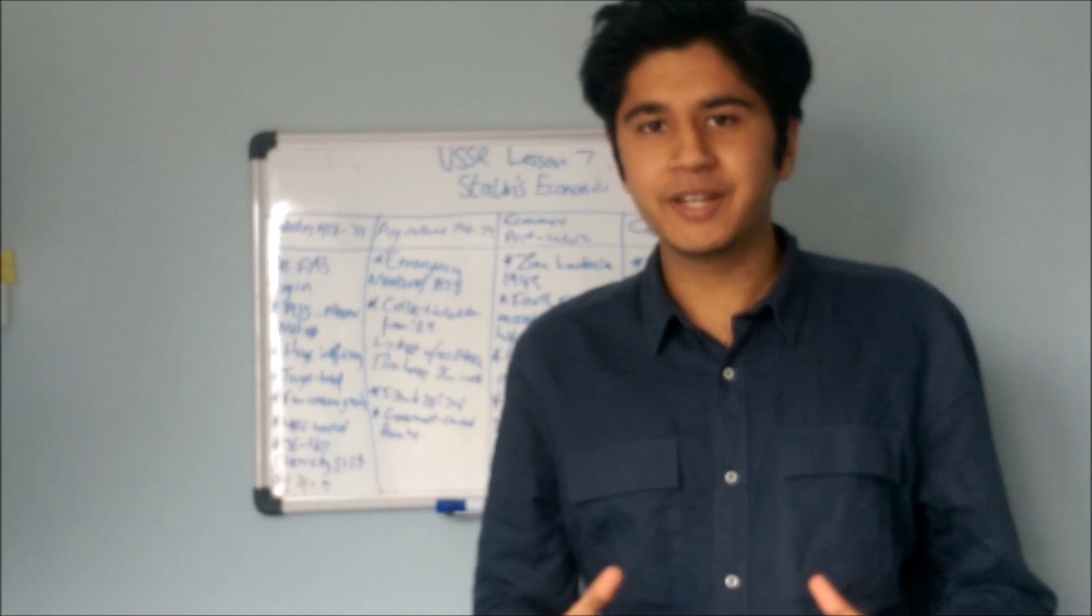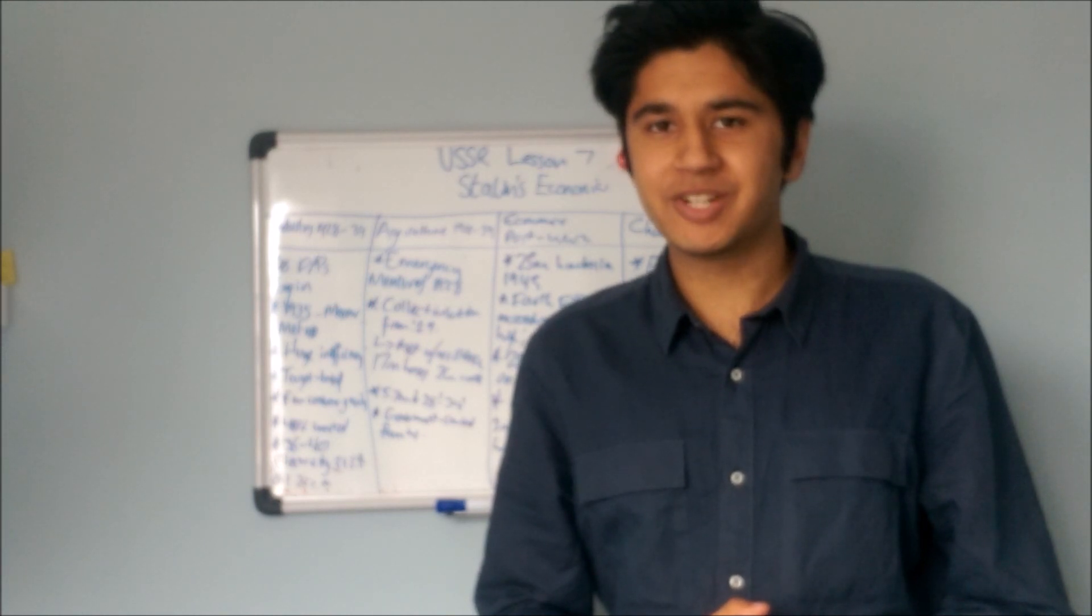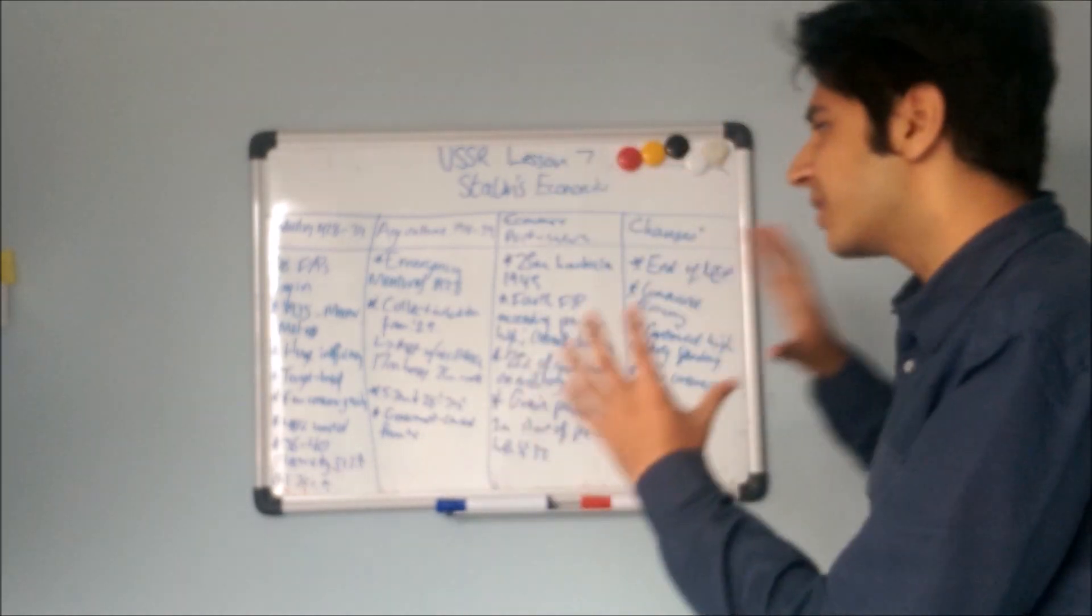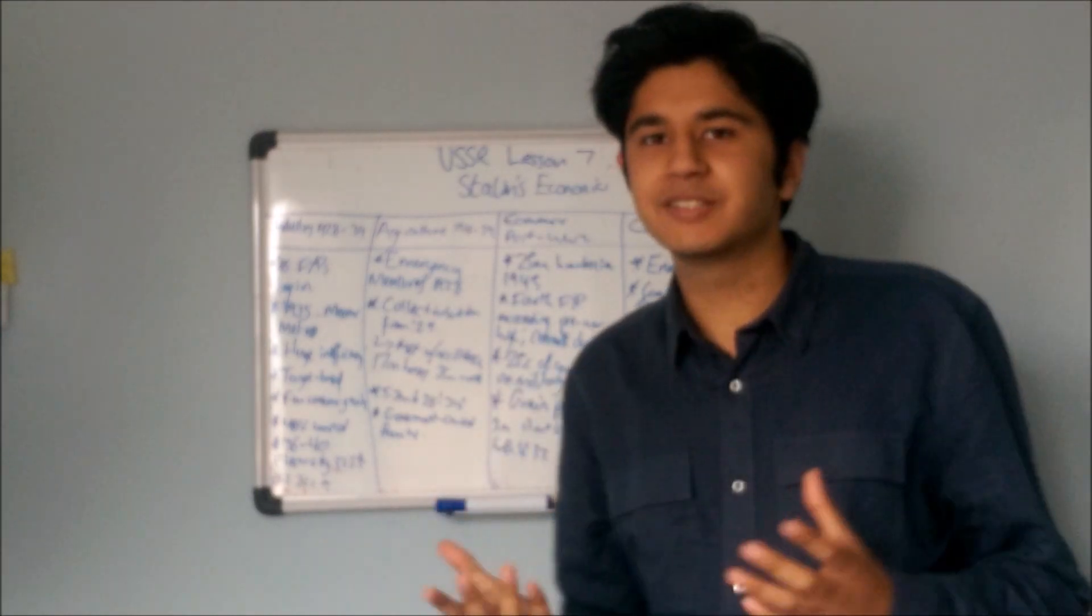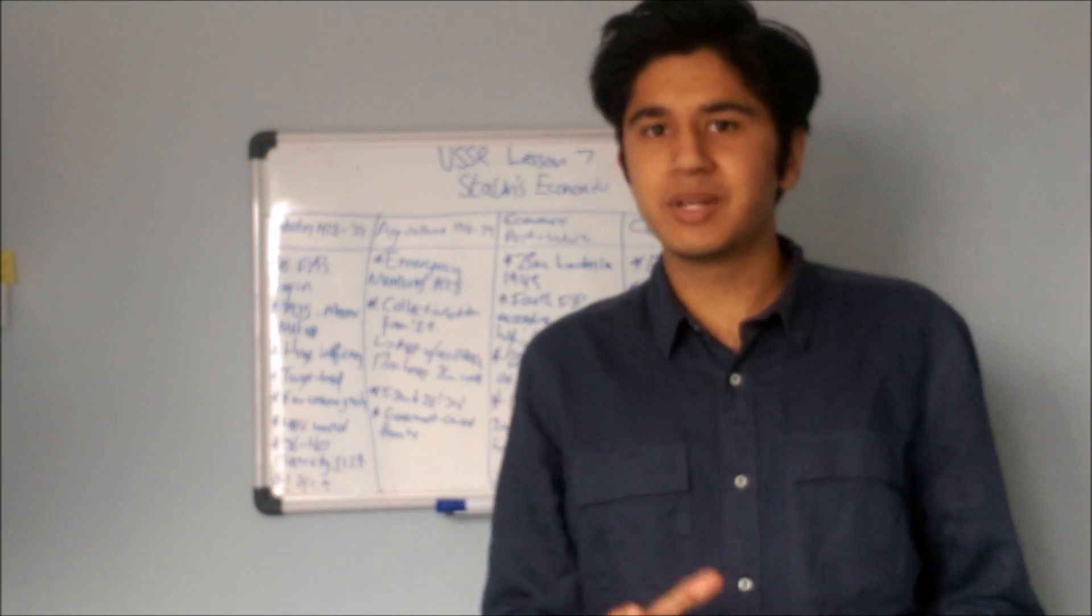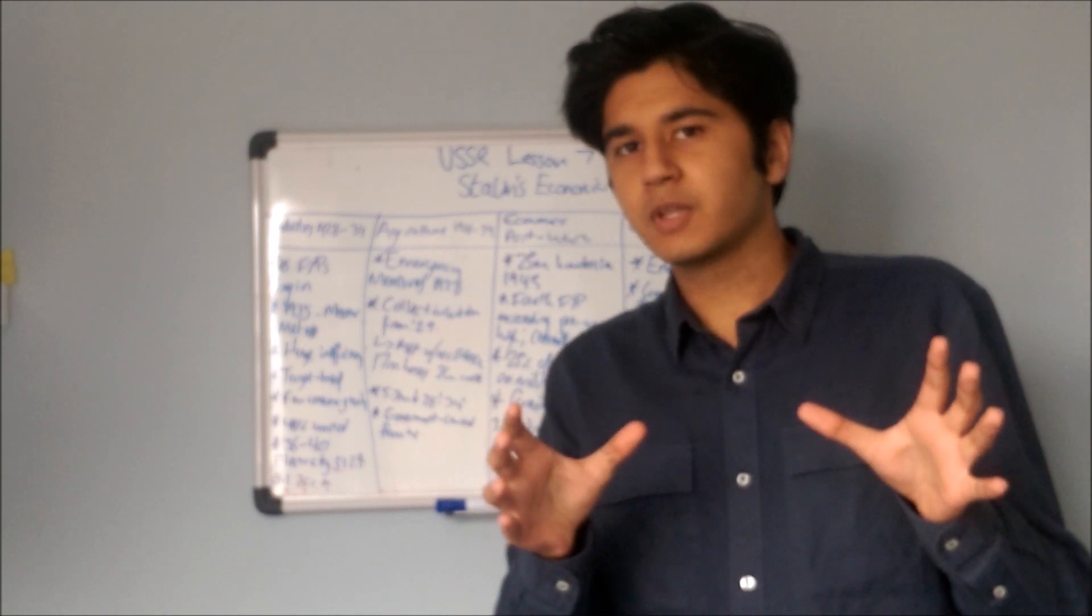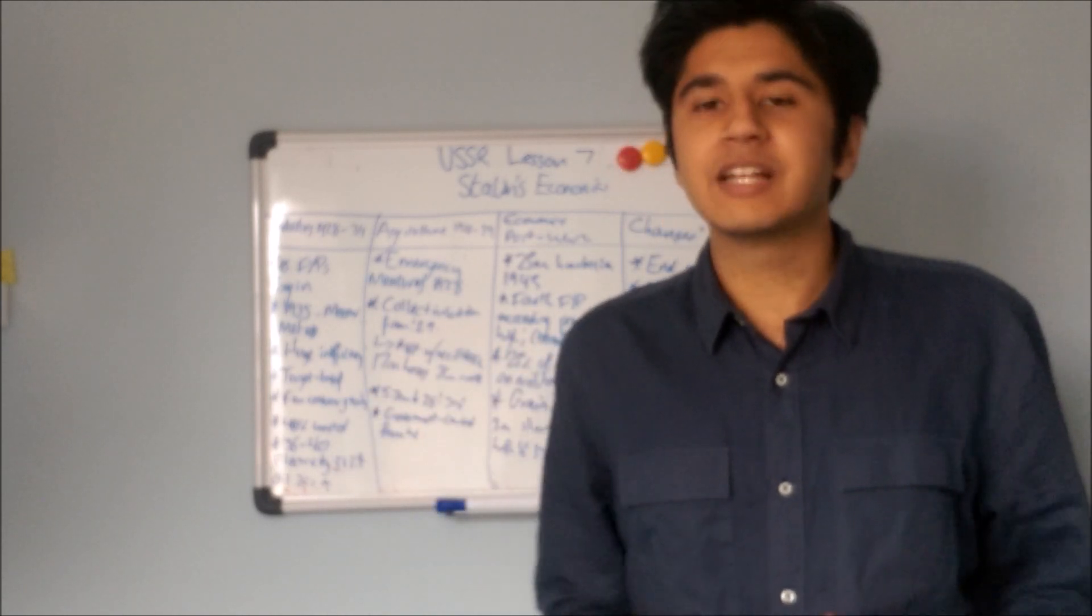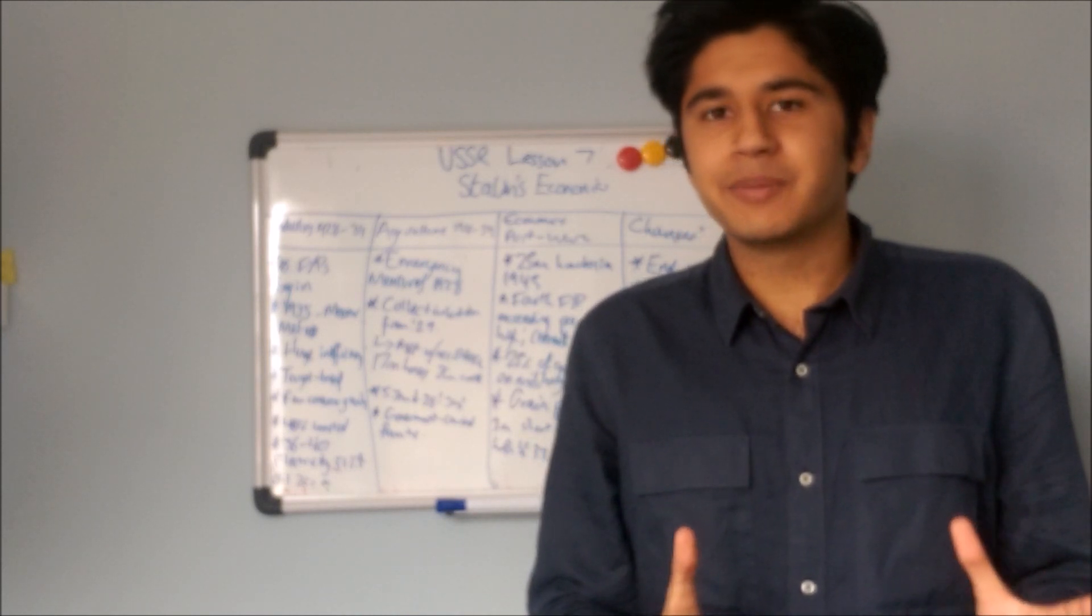Hello. This video is all about Stalin's economic policy, covering the period from about 1928 to 1953. As you can see, this board is absolutely packed with stuff. When we look at economic history, it's not just enough to know what happened - it's also really important to understand the statistics and the aims of leaders. There's a lot in this lesson.